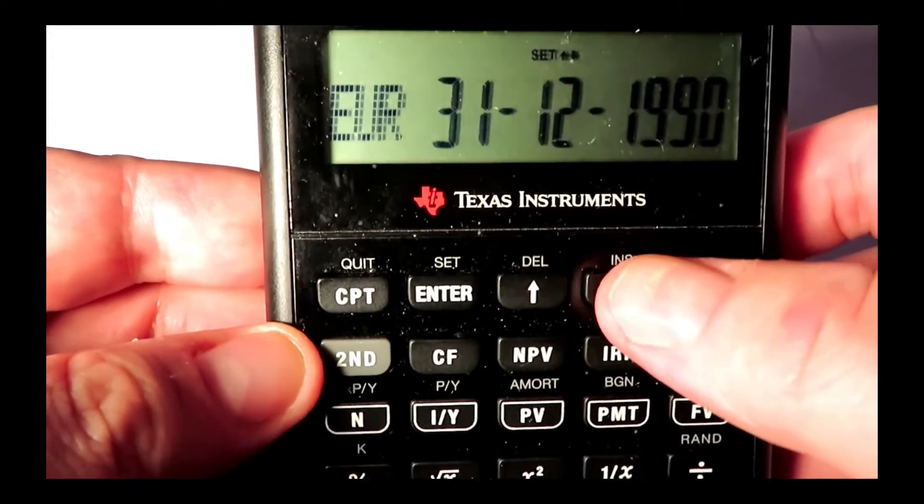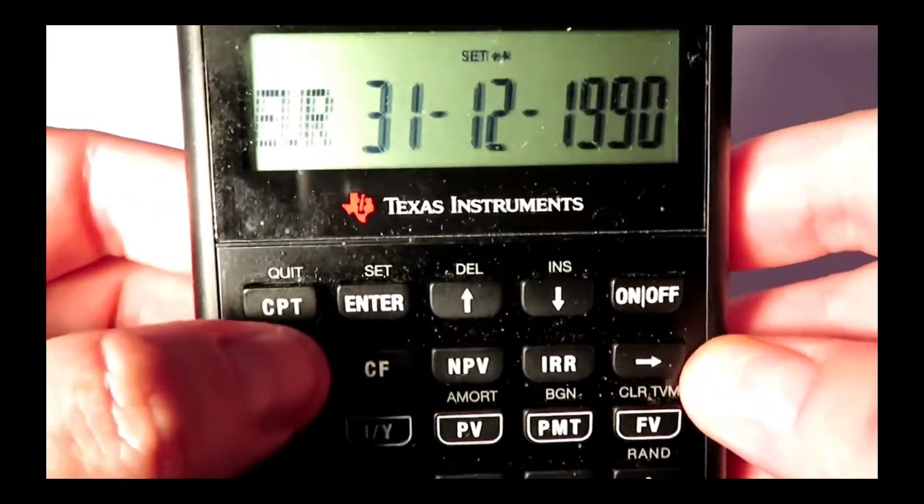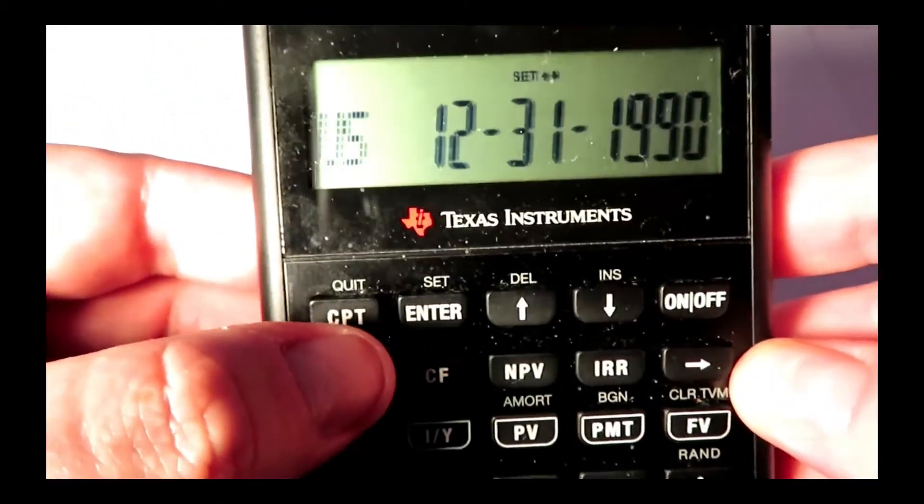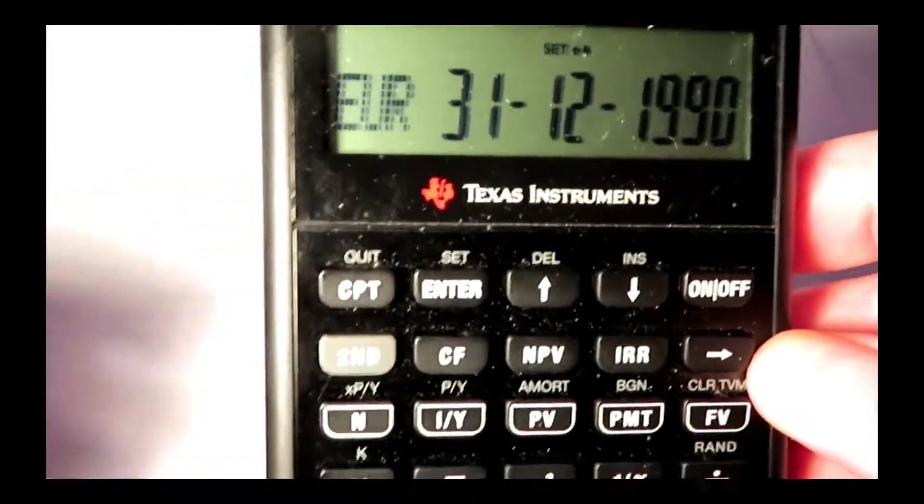Now if you push down, you can check European or US time, so that's with a day, month, year. Second, enter, changes to US, which is month, day, year. I'm going to put it back to European because that's how I prefer it.